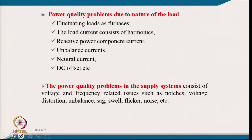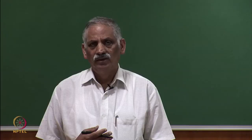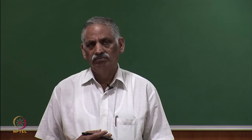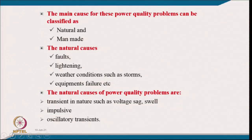The causes of power quality problems can be classified as natural or man-made. Natural causes include faults in the system, lightning, thunderstorms, weather conditions such as storms or equipment failure. These natural causes of power quality problems are transient in nature — impulsive or oscillatory.